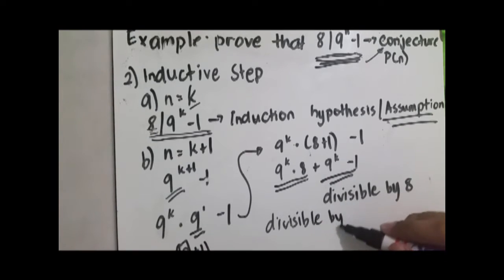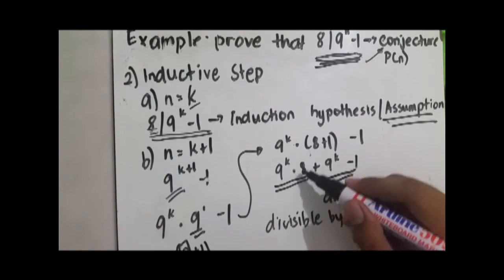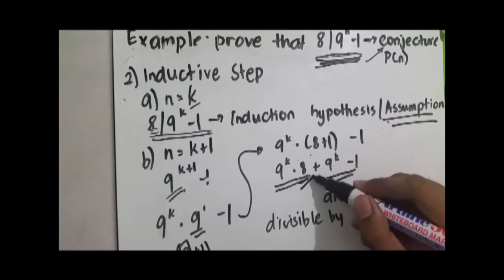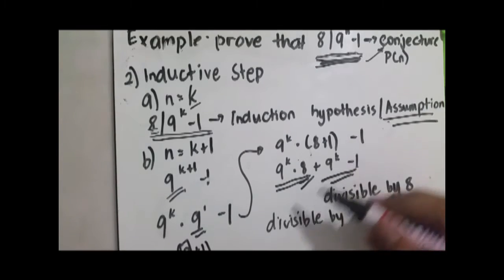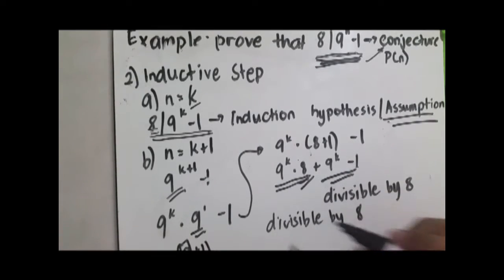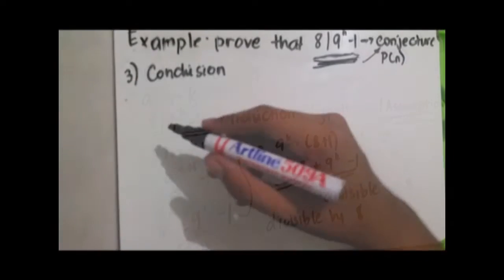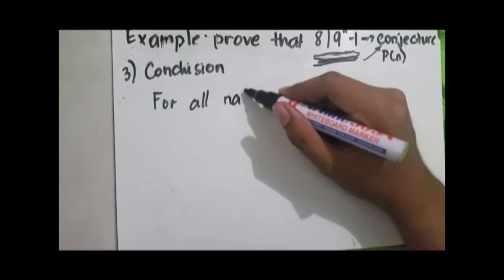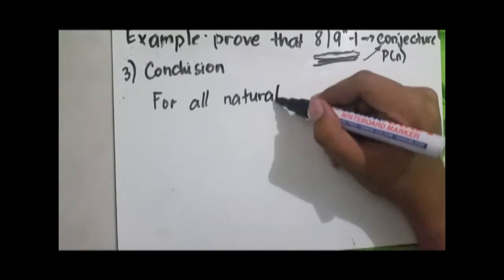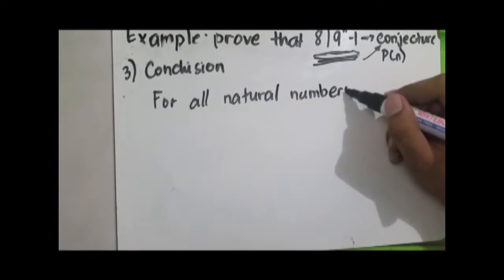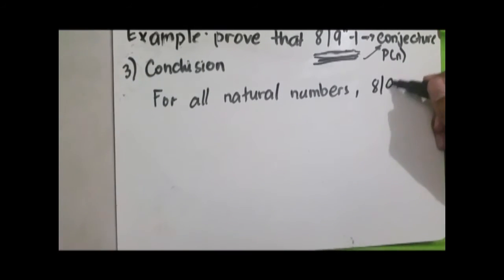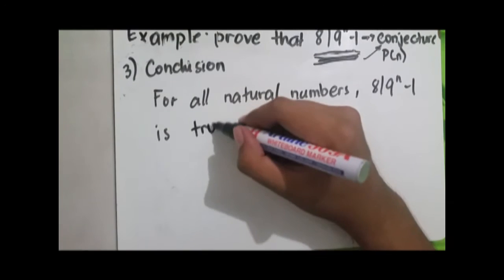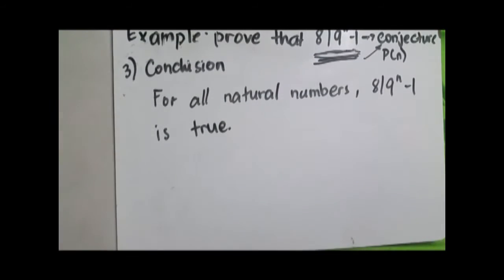So, what we have shown is that for all natural numbers, the conjecture that 8 divides 9^n minus 1 is true.